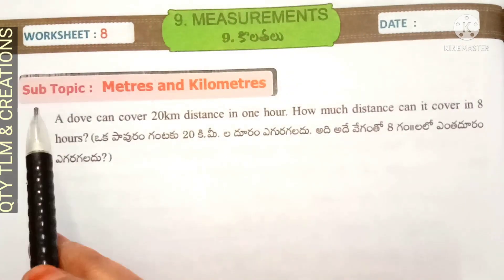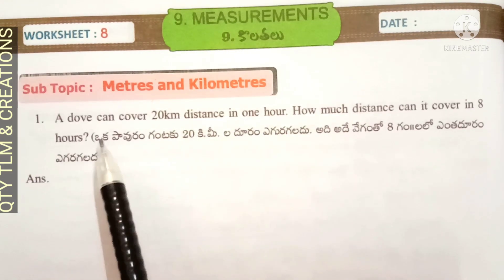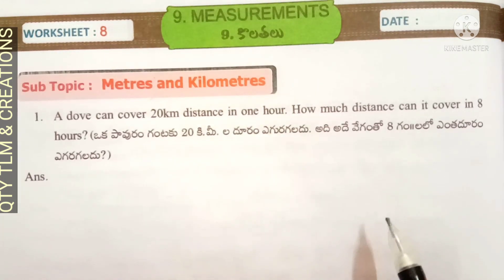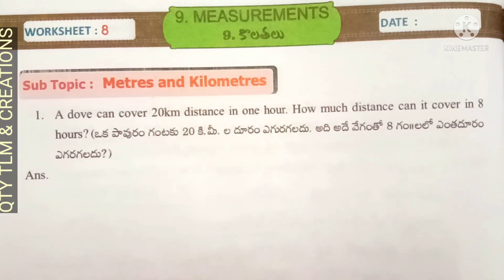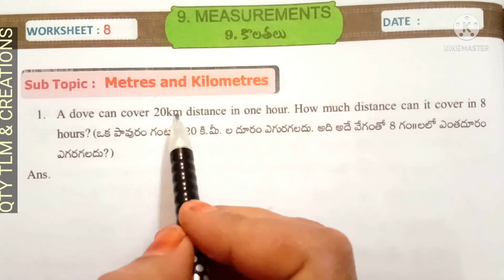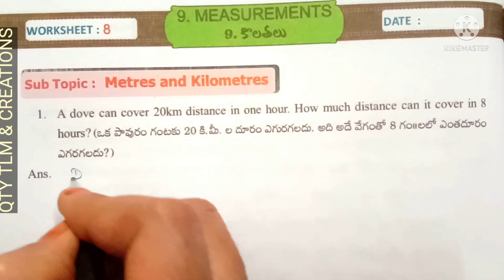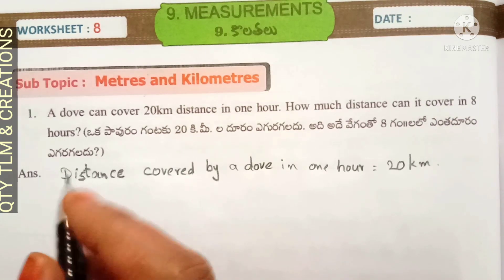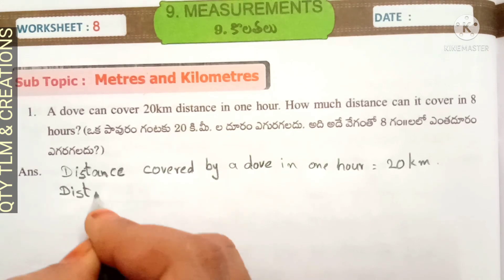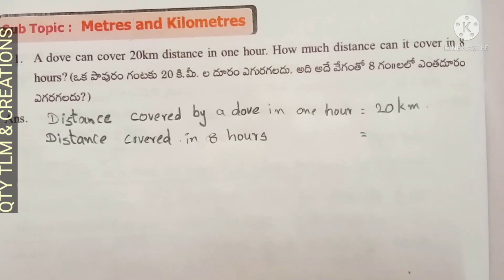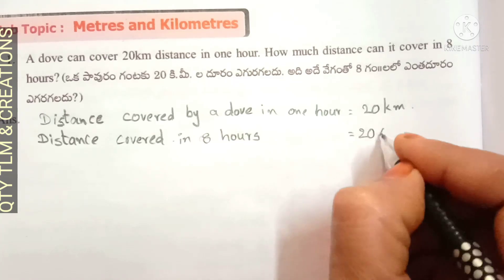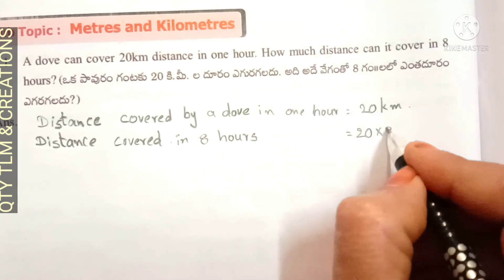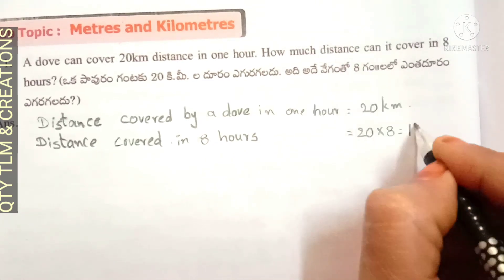Next, worksheet number eight, subtopic meters and kilometers. First question: a dhow can cover 20 kilometers distance in one hour. How much distance can it cover in 8 hours? Distance covered by a dhow in one hour is equal to 20 kilometers. Distance covered in 8 hours is equal to 20 into 8 hours, that is equal to 160 kilometers.